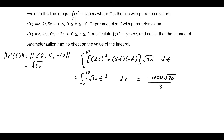Now, reparameterize C with parameterization s of t equal to angle bracket 4t, 10t, negative 2t, close angle bracket, with 0 less than or equal to t less than or equal to 5, and recalculate the line integral along the curve C of the function x squared plus yz. Notice that the change of parameterization had no effect on the value of the integral.